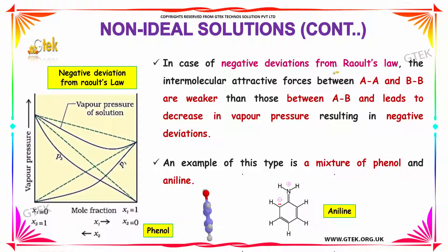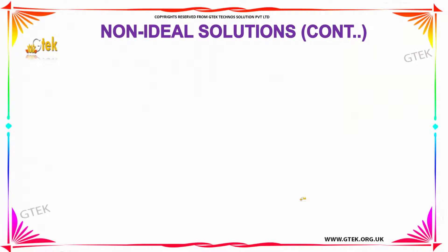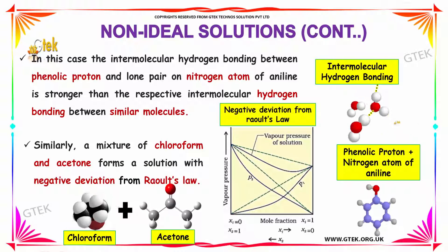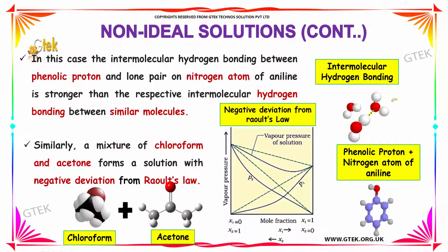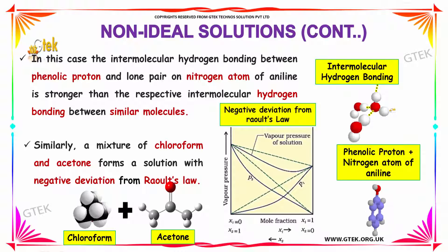In case of negative deviations from Raoult's law, the intermolecular attractive forces between AA and BB are weaker than those between AB, leading to a decrease in vapor pressure and resulting in negative deviations. An example of this type is a mixture of phenol and aniline. The intermolecular hydrogen bonding between the phenolic proton and the lone pair of the nitrogen atom of aniline is stronger than the respective intermolecular hydrogen bonding between similar molecules.